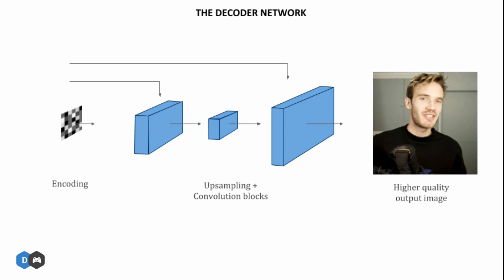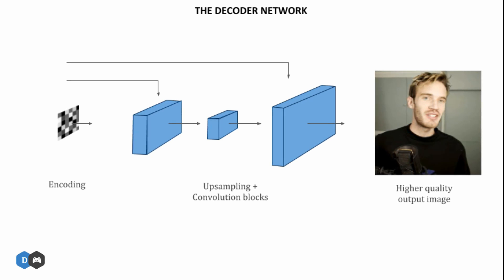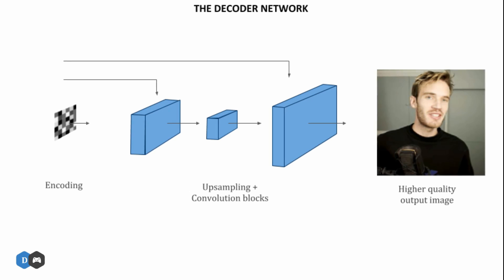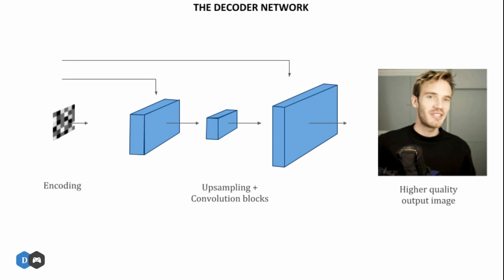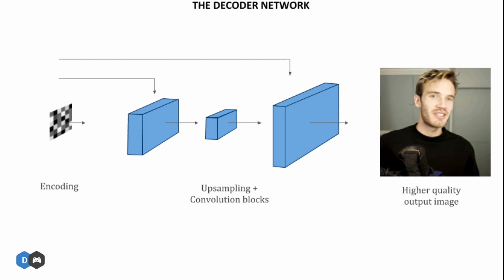The arrows coming from the encoder network are used in the decoder in order to generate more detail — consider this as the decoder asking the encoder what the image looks like. This way, even though the encoding comes from a lower-dimensional space, the decoder is able to obtain information of the image. At the end, we do another upsampling in order to obtain the original resolution that was fed into the network. After training on enough samples and epochs, the network is able to identify what parts of the image need to be enhanced to make it higher resolution or higher quality.